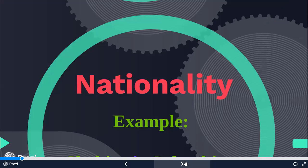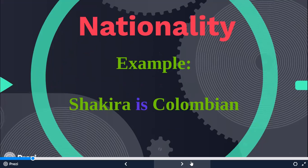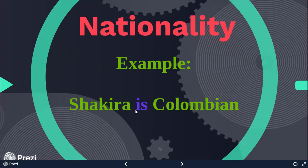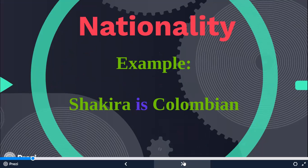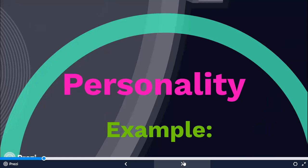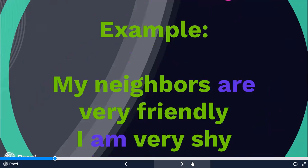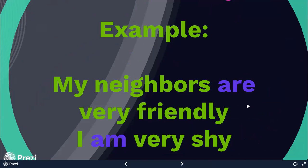The first function of the verb be is to talk about nationality. Shakira is Colombian, I am Mexican, and you are Mexican. We see here the verb be conjugated in the third person singular. So we use the verb be for nationality. Then we also use verb be to describe some aspects about our personality — when we use adjectives to describe personality, we have to use verb be.